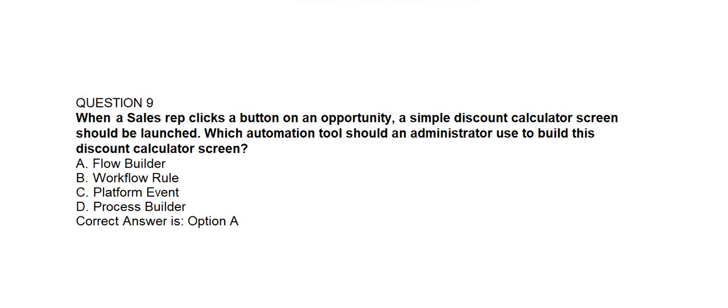Question number 9. When a sales rep clicks a button on an opportunity, a simple discount calculator screen should be launched. Which automation tool should an administrator use to build this discount calculator screen? Option A: Flow Builder. Option B: Workflow Rule. Option C: Platform Event. Option D: Process Builder. Correct answer is Option A: Flow Builder.